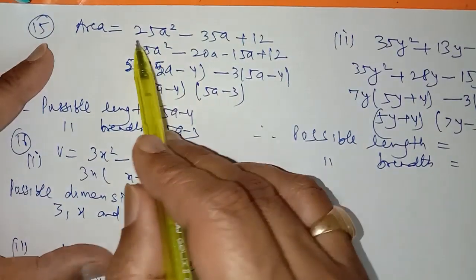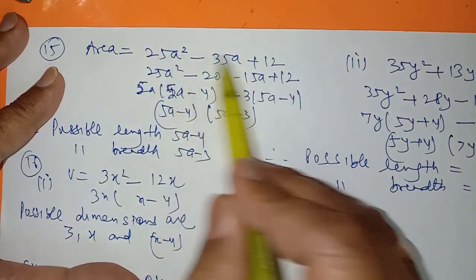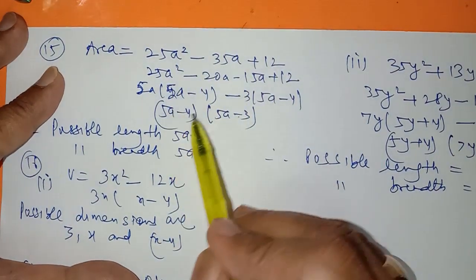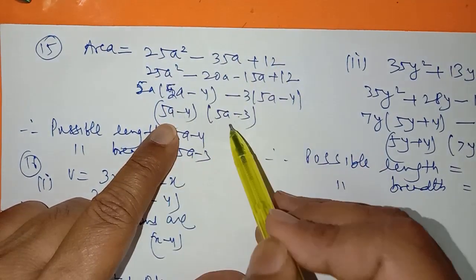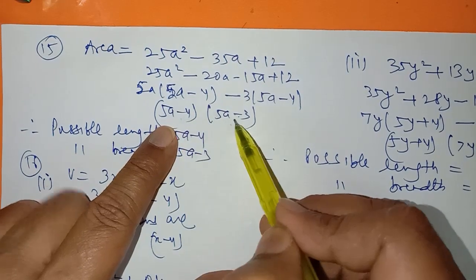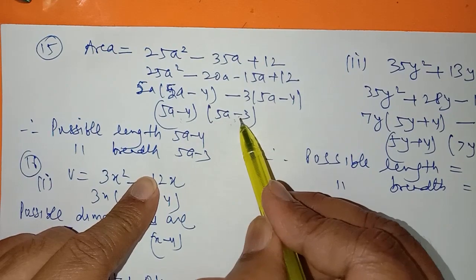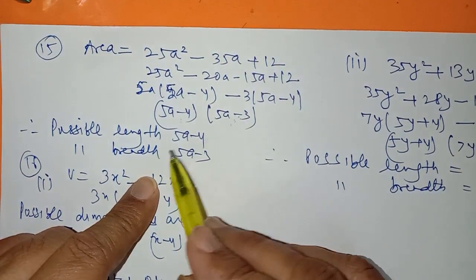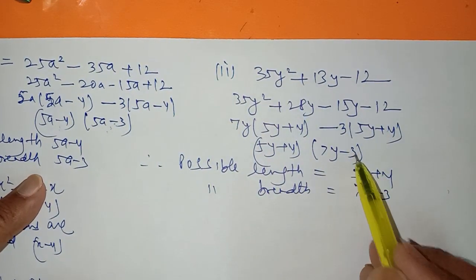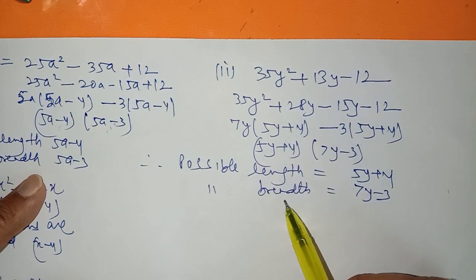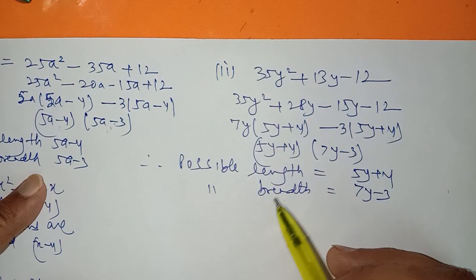The remaining questions are easy. The area of a rectangle is given and you have to find the length and breadth. Simply factorize by splitting the middle term. Since area equals length into breadth, you write 'possible length and breadth.' Similarly, factorize the second expression by splitting the middle term. The two factors are the possible length and breadth — write the word 'possible' since either factor can be length or breadth.